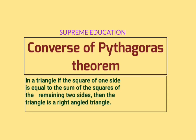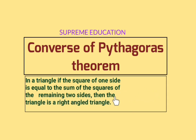The statement of Pythagoras theorem is: in a right angle triangle, the square of the hypotenuse is equal to the sum of the squares of the remaining two sides. The statement of the Converse of Pythagoras theorem is: in a triangle, if the square of one side is equal to the sum of the squares of the remaining two sides, then the triangle is a right angle triangle.